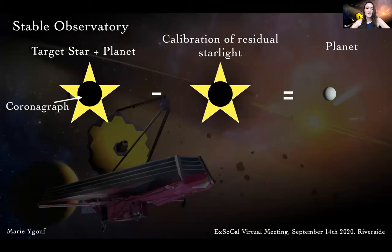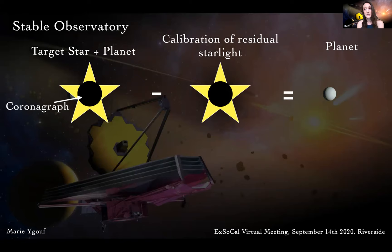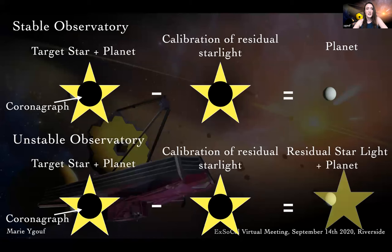Post-processing techniques consist in calibrating the speckle field or residual starlight using the image itself or an image of a reference star. In this example, a target star with a companion is observed with a coronagraph and a reference star is also observed in the same configuration to obtain an image of the residual starlight, which is subtracted from the target image to finally obtain the image of the planet. These techniques are entirely dependent on the stability of the instrument during observations. In the case of an unstable observatory, there will be residuals from the starlight, and most of the time those residuals prevent the detection of faint sources close to the star.